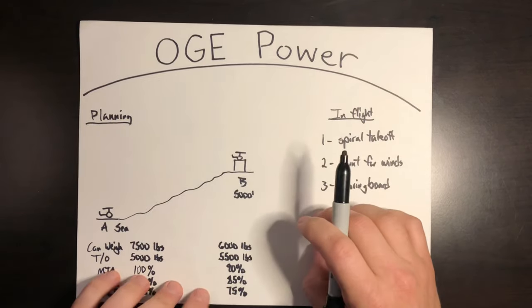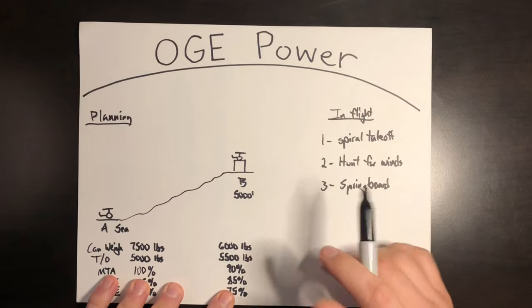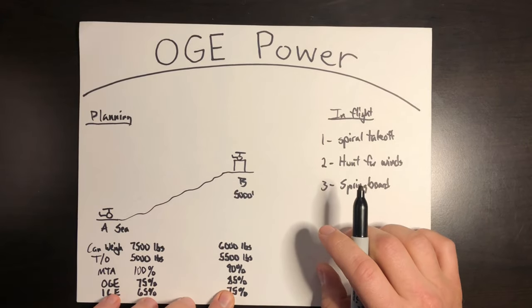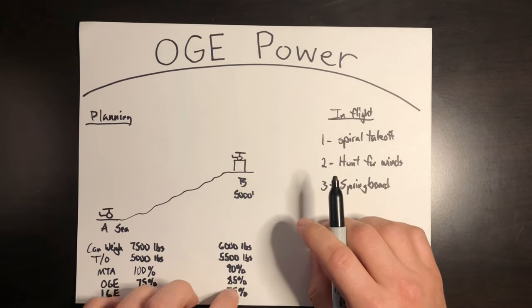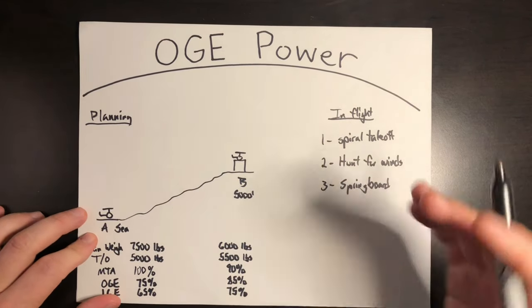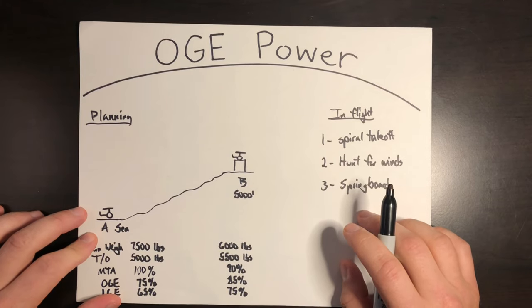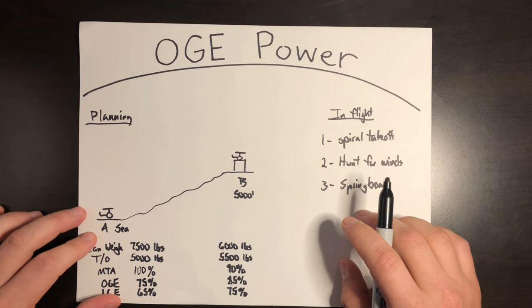But by using these, really one or more of these techniques, you can squeak out just a little bit more lift out of your OGE takeoffs to be able to get up and out a little bit easier. But as it stands right now, I'm running out of time for this video, but if you enjoyed it, be sure to hit like and subscribe. Thanks for watching. And as always, I'm Jacob, safe flying.